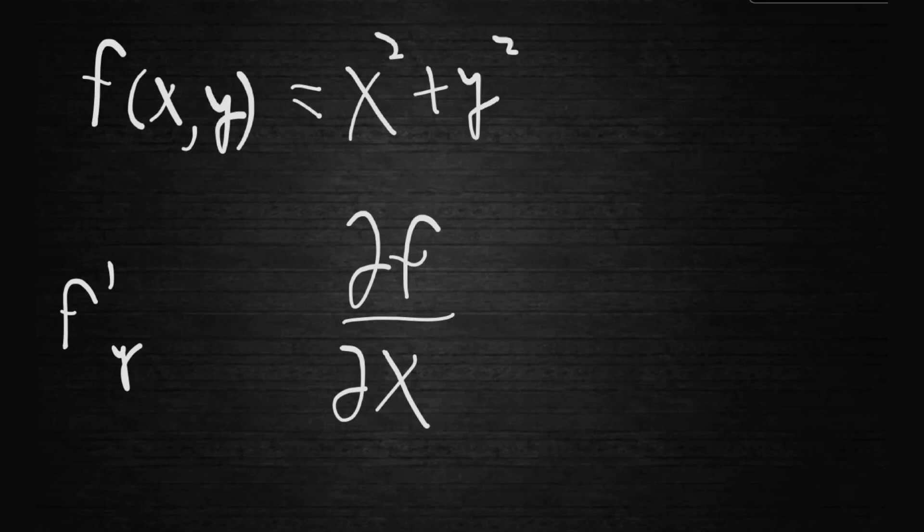And if we were to do it with that function up there, it is the derivative of f with respect to x while keeping y constant. Y we treat as a constant. If we were to take a partial derivative of this, let's do this with respect to x. We would get 2x and that's it. We treat y as a constant.